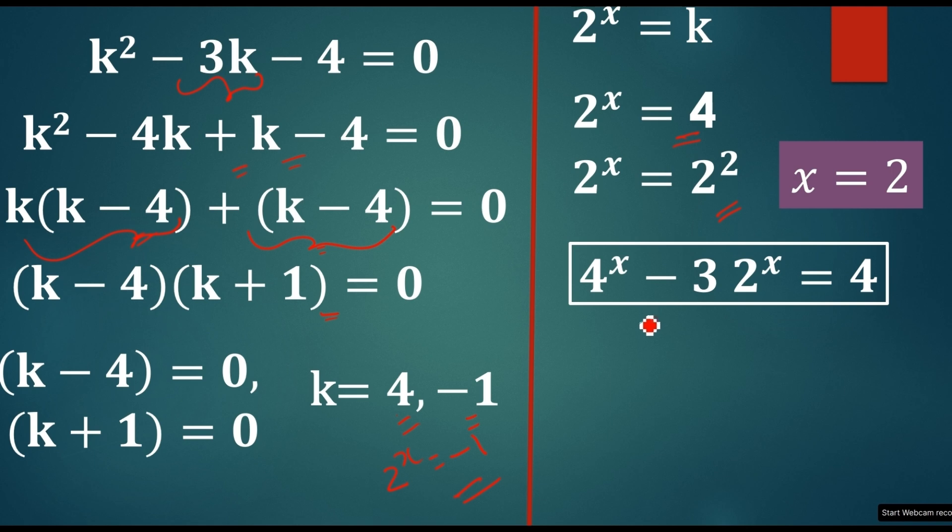Let's substitute x is equal to 2 here. So, it will become 4^2 minus 3 times 2^2 equal to 4. So, then 4^2 is 16, 2^2 is 4 so 3 times 4. So, 16 minus 4 times 3 is 12 is also 4. So, 4 equal to 4.